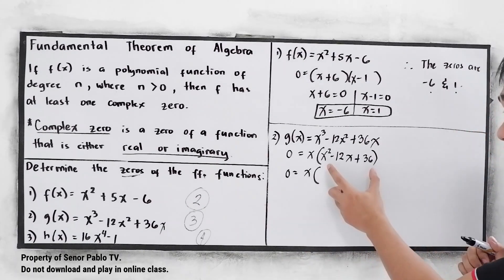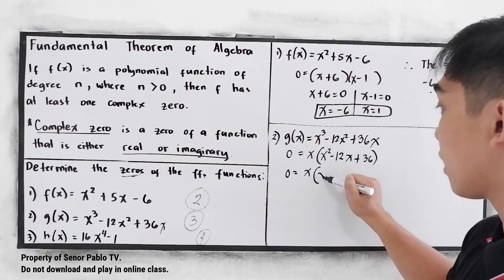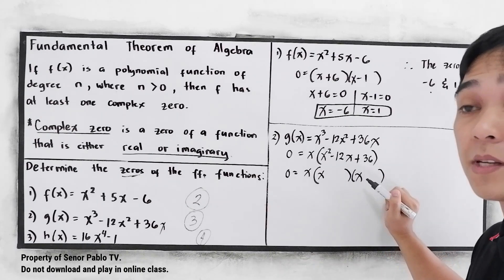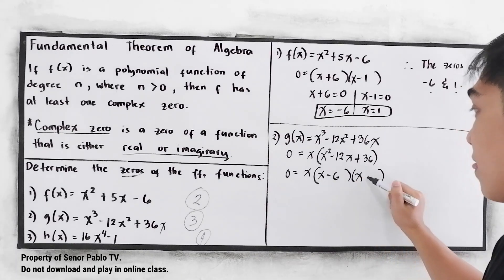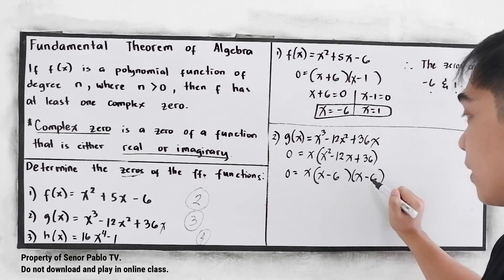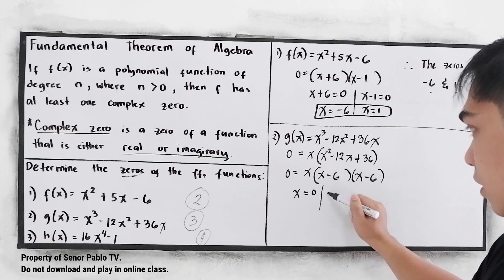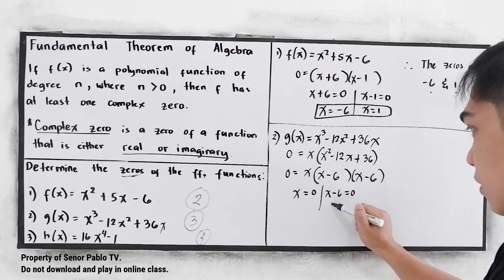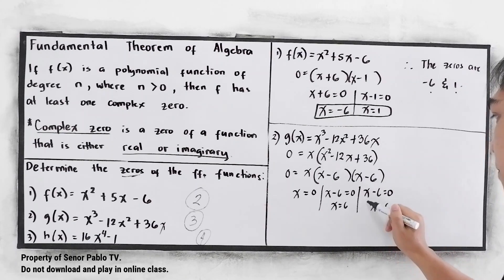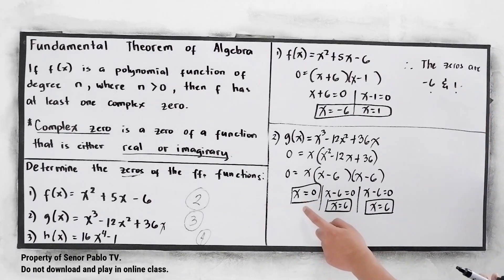Now we have a quadratic inside the parenthesis, so we can still factor this out. The factors of positive 36 whose sum must be negative 12 are negative 6 and negative 6, since negative 6 times negative 6 is positive 36, and negative 6 plus negative 6 is negative 12. Now we equate to 0: x is equal to 0; x minus 6 is equal to 0, so x is equal to 6; and x minus 6 is equal to 0, so x is equal to 6. Notice that we have 3 zeros: 1, 2, 3.